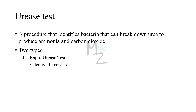Now let's look at the urease test — it's a procedure that identifies bacteria that can break down urea to produce ammonia and carbon dioxide. There are two types: the rapid urease test and the selective urease test. I'm not going to discuss these two tests here as they'll be covered in a separate video, which I'll link in the description.